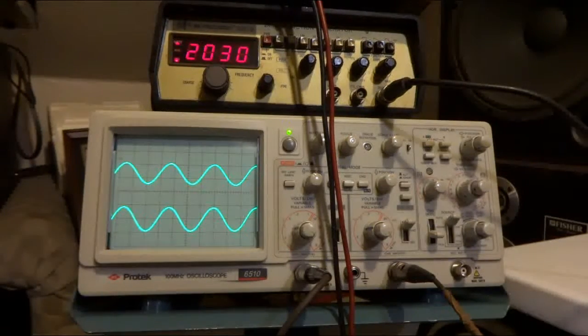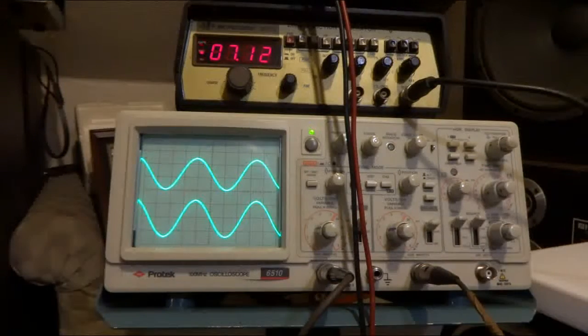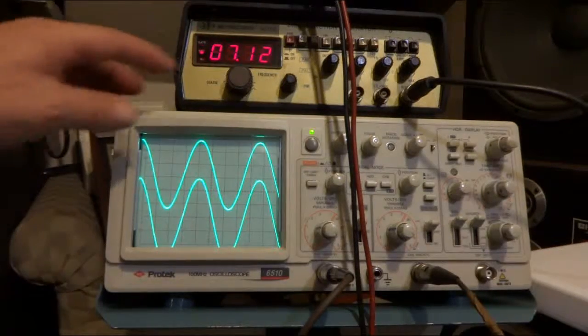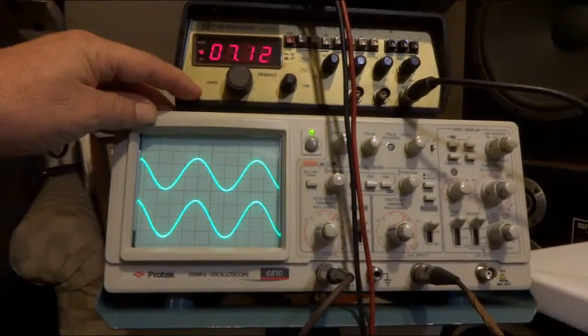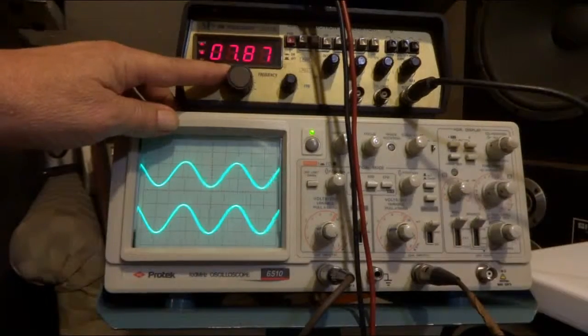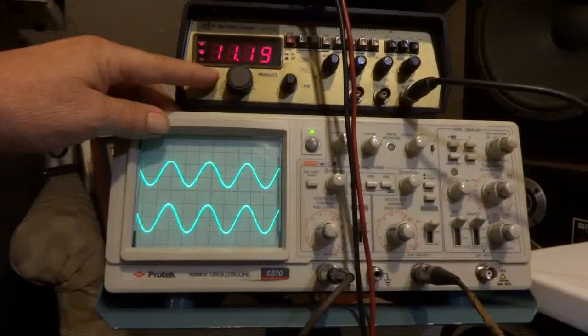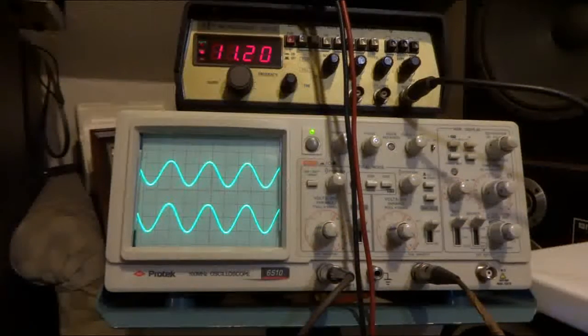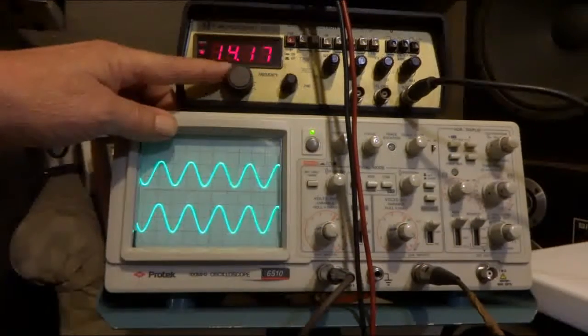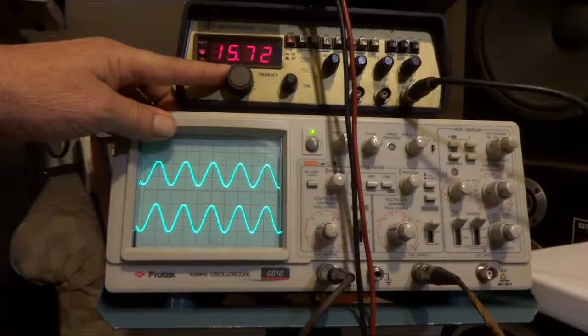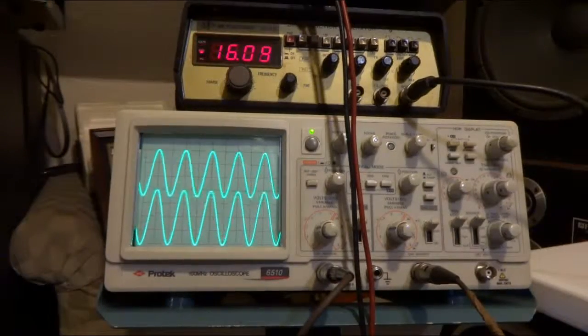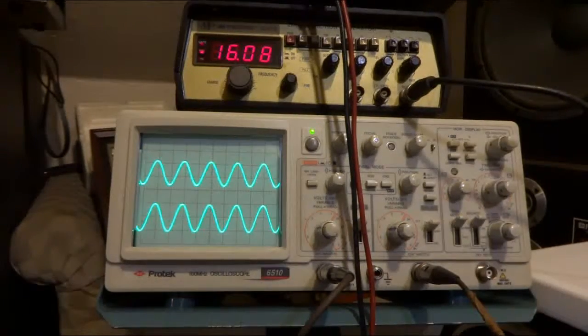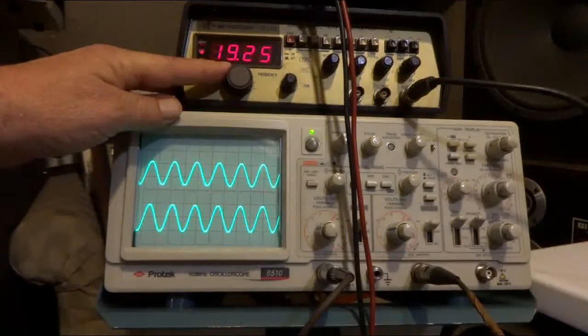Let's go through the higher ranges. I'm at about 7k. Treble up, treble down. About 11k, treble up, treble down. I'm at about 16k, treble up, treble down. And this is about 20k. Treble all the way up, treble all the way down.